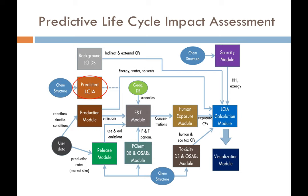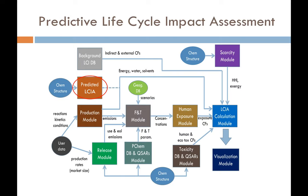Now I'd like to introduce another module — the predictive life cycle impact assessment module — where we apply machine learning techniques to predict chemical life cycle impact based only on molecular structure. This module lies at the very beginning of the CLICK project and will utilize only chemical structure information to predict the life cycle characterization result. Because it requires very little input from the user, it can generate results fairly fast and gives us the advantage of screening large amounts of chemicals in a short time.